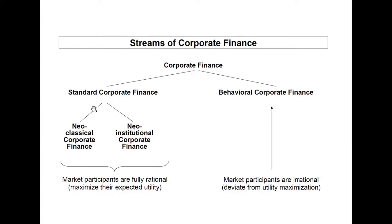The oldest stream of corporate finance is definitely neoclassical corporate finance. In neoclassical corporate finance, to facilitate things, you are working in a very simple and idealized model setting. Especially you assume a perfect capital market. The assumption of a perfect capital market includes several assumptions. First, everybody has equal and free access to the capital market, so there are no capital market restrictions.